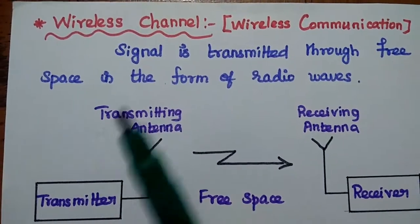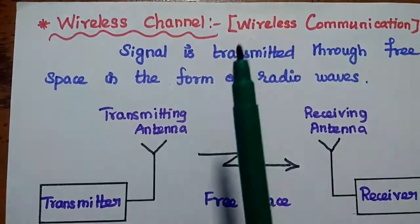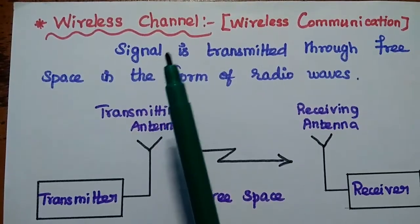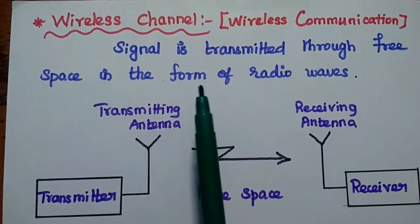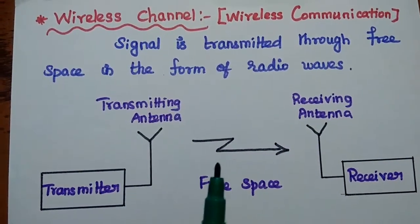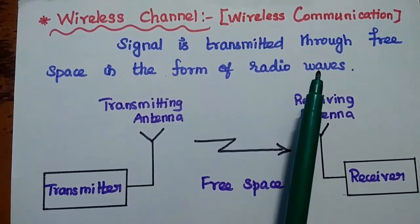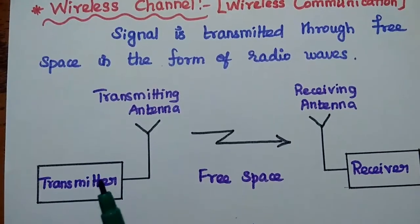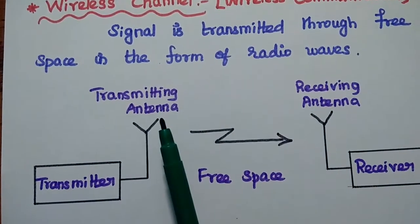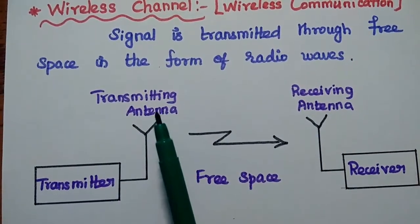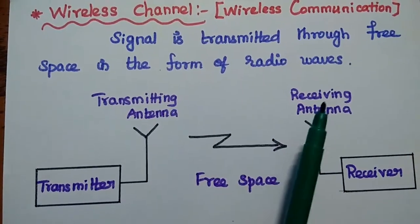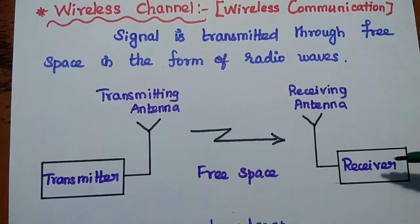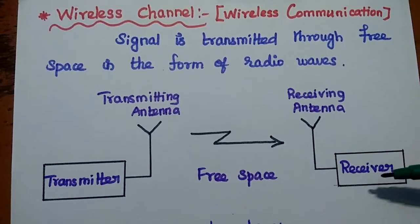The next type is the wireless channel, also called wireless communication. In wireless communication, the information signal is transmitted through free space in the form of radio waves — the channel is free space. Radio waves are radiated from the transmitting antenna into free space, then received by the receiving antenna, which passes the signal to the receiver to recover the original signal.